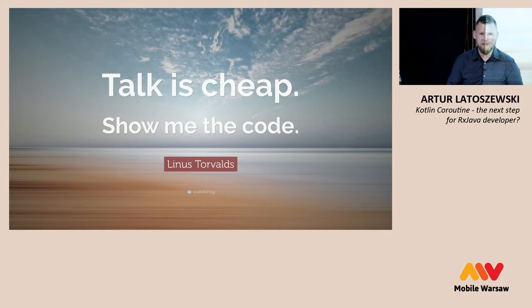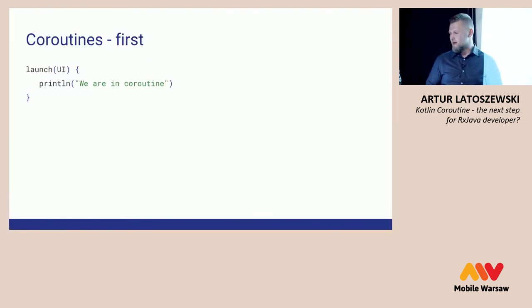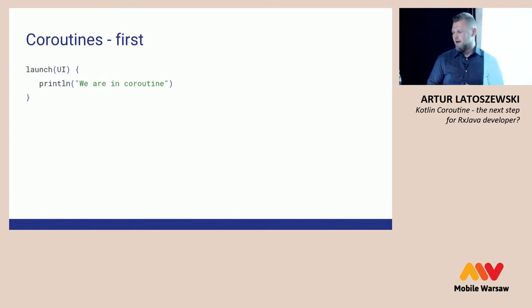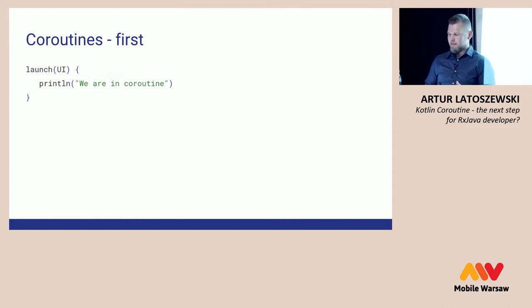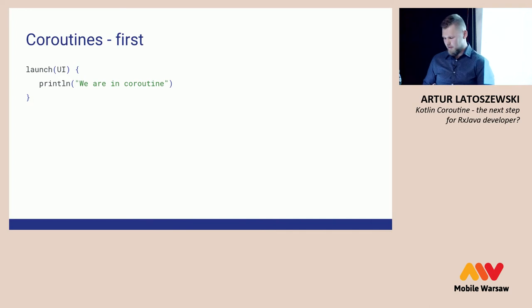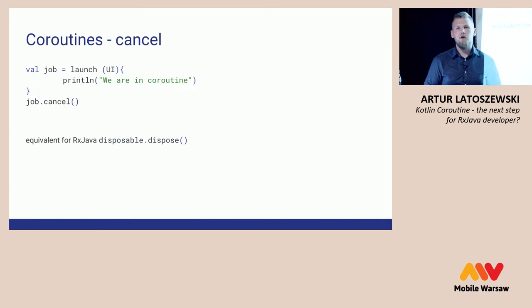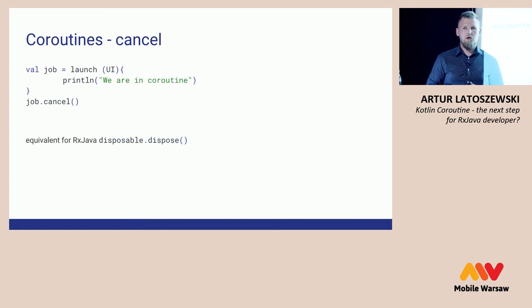Talk is cheap — show me the code. This is our first coroutine. We just launch a coroutine on the UI thread and inside we can call a suspend function, quite simply. To cancel the coroutine — as I said before, launch returns a Job object, and we can just call cancel. This is the equivalent of RxJava's Disposable and dispose.